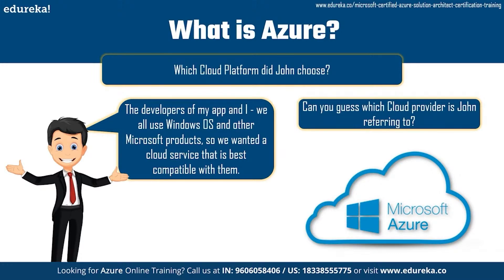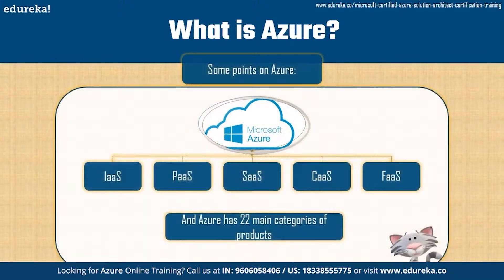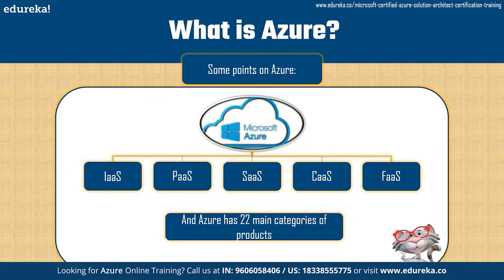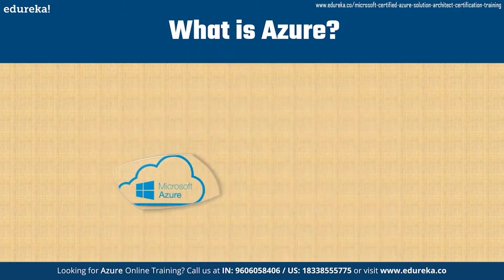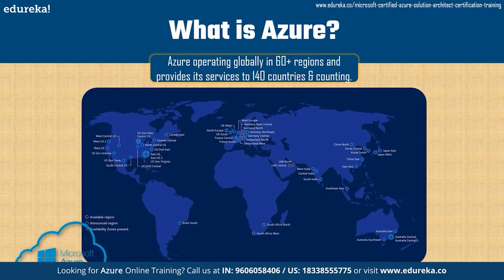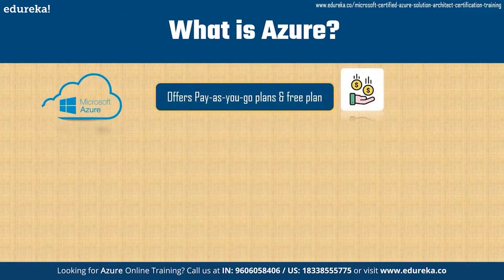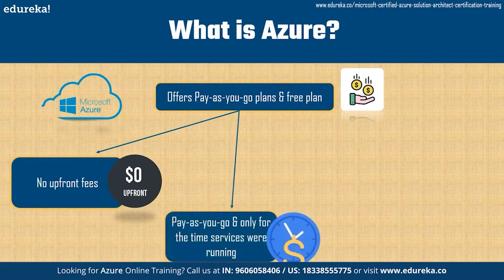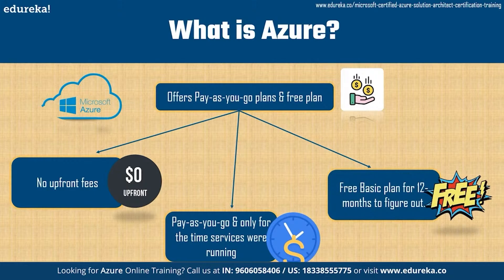Just like every other cloud platform, Azure provides five distinct types of services: Infrastructure as a Service, Platform as a Service, Software as a Service, Container as a Service, and Functions as a Service. Azure has 22 main categories of products and is operating globally in 60-plus regions, providing services to 140 countries and counting. Azure provides pay-as-you-go plans and a free plan with no upfront fees. There is also a free basic plan which is valid for 12 months, so you can tinker around and see if you like it.